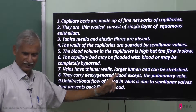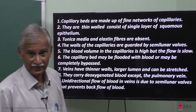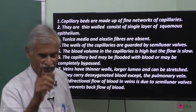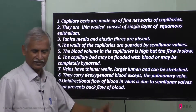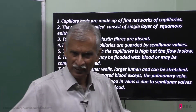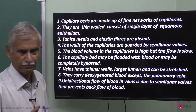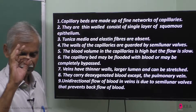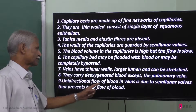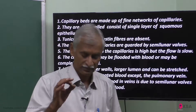Veins carry deoxygenated blood. However, the pulmonary vein carries oxygenated blood from the lungs to the heart. There is a unidirectional flow of blood in all the veins. This unidirectional flow is guaranteed by semilunar valves present in the veins, which prevents the backflow of blood.